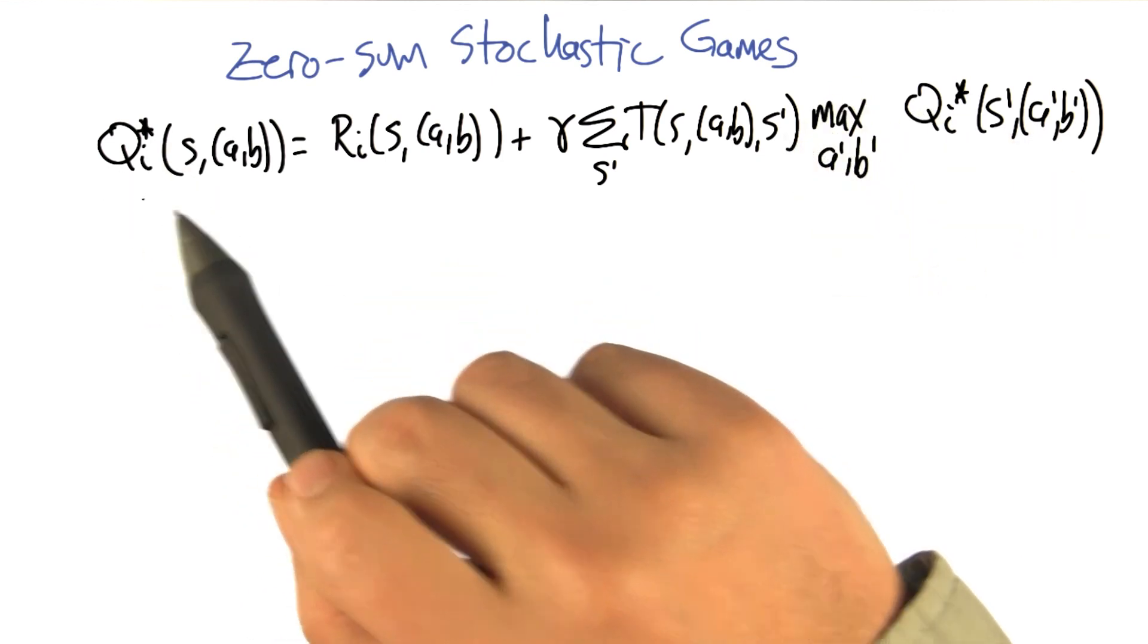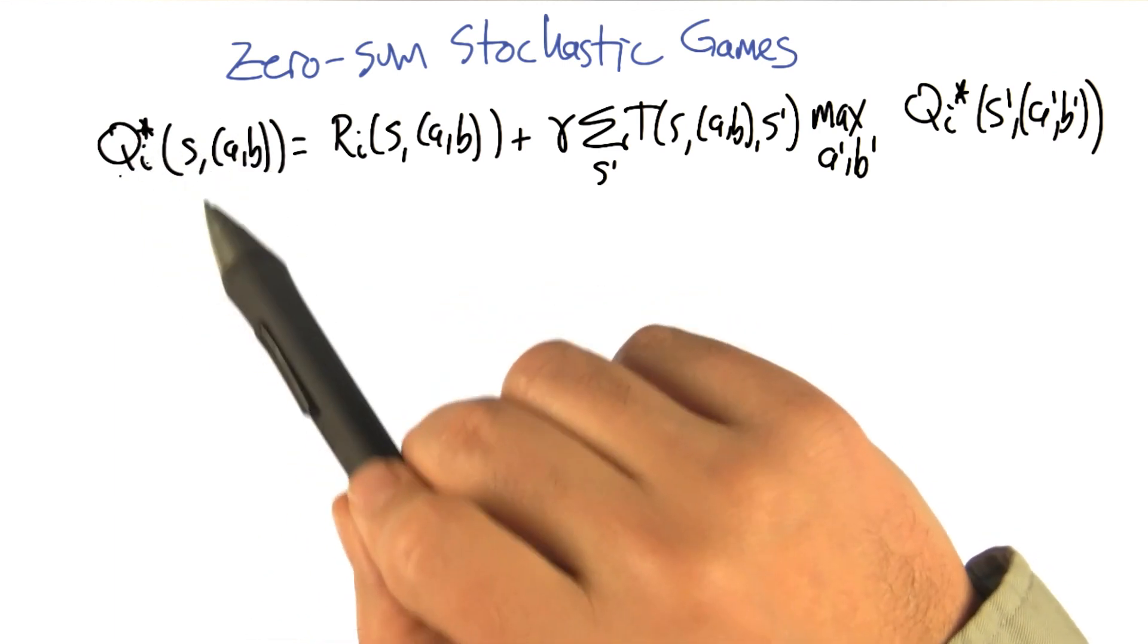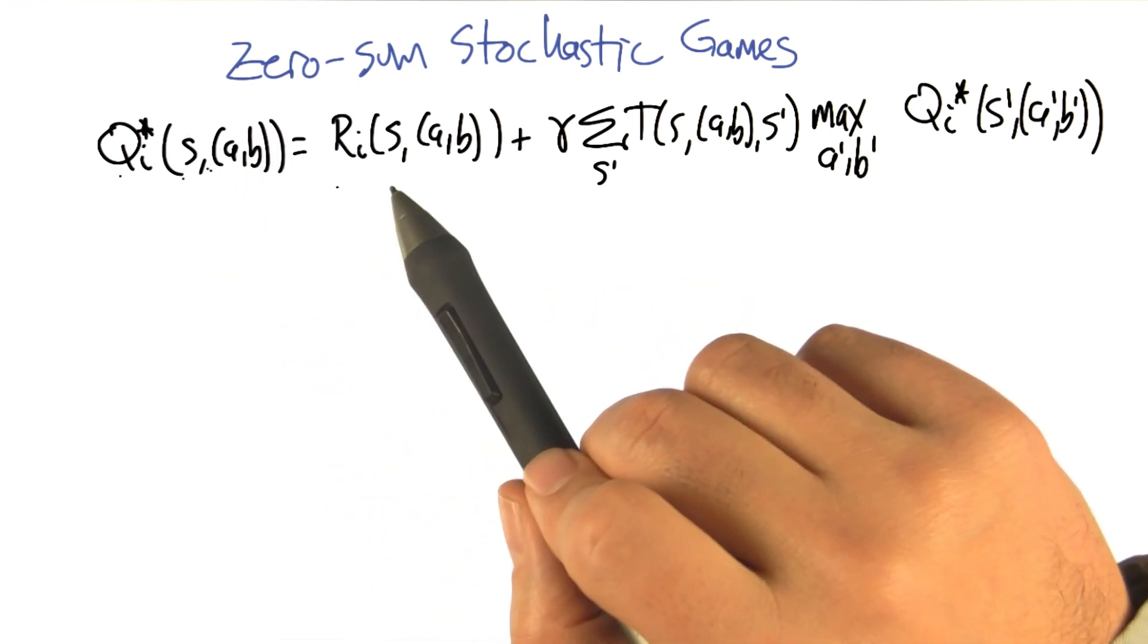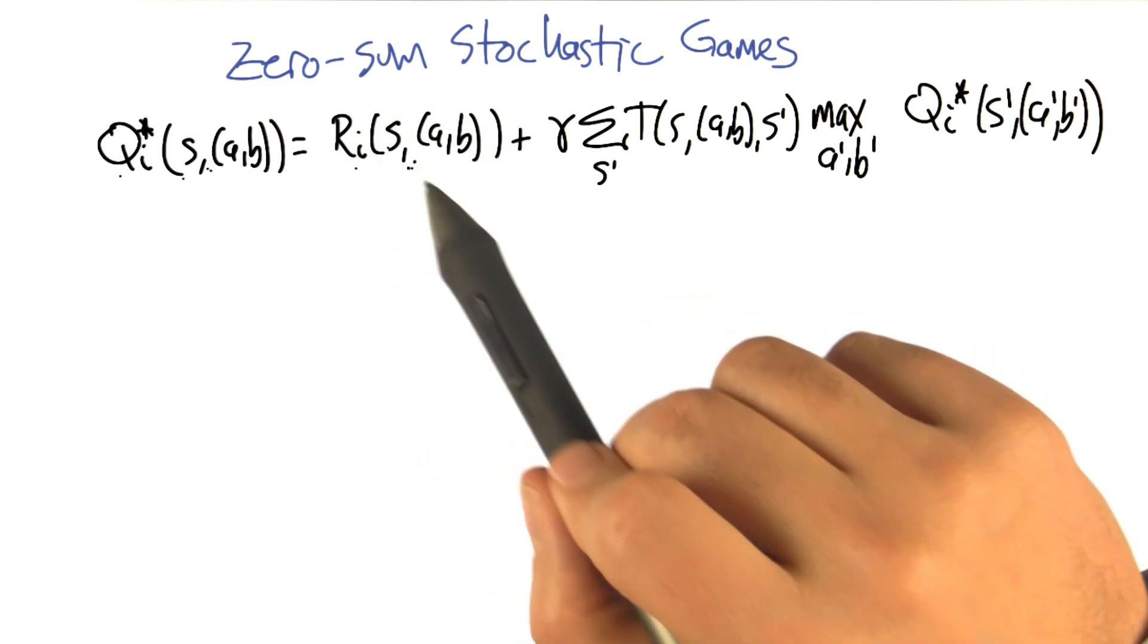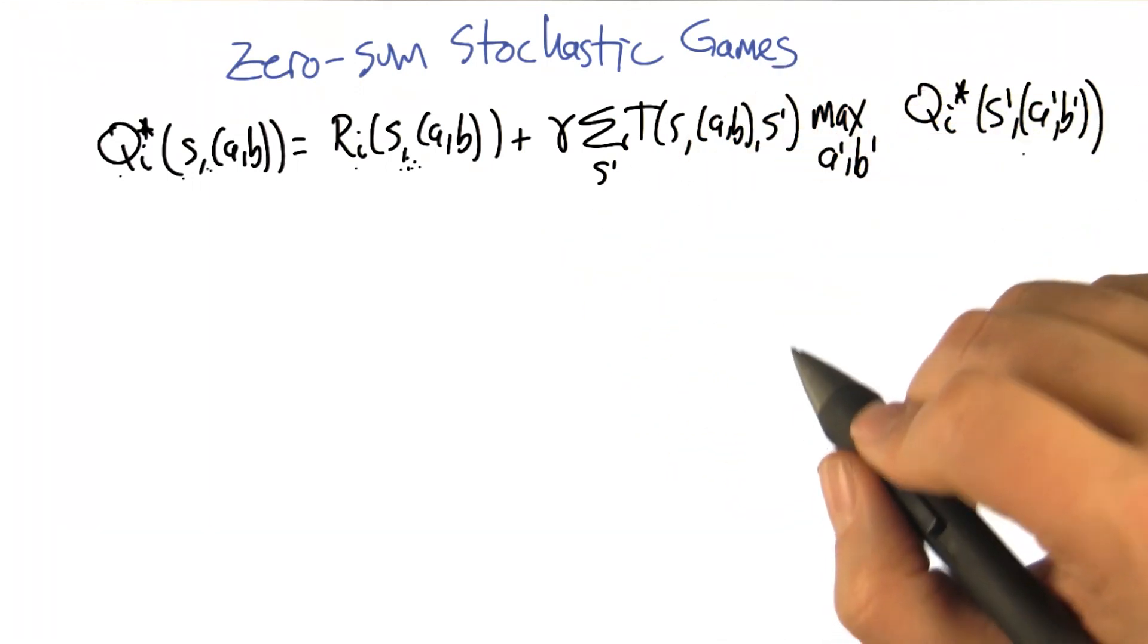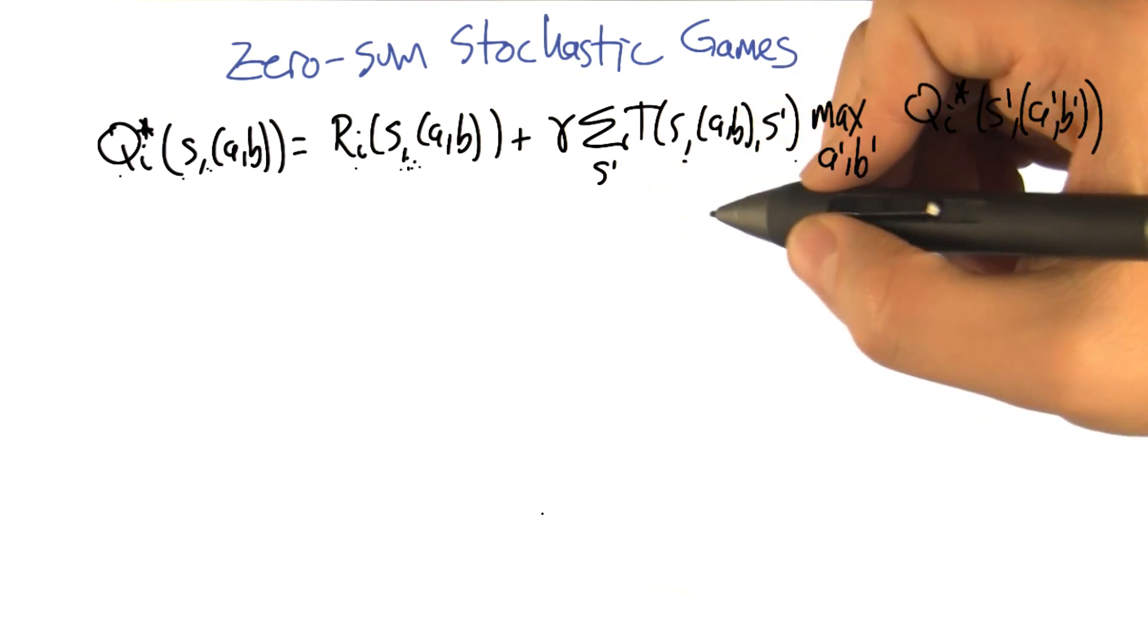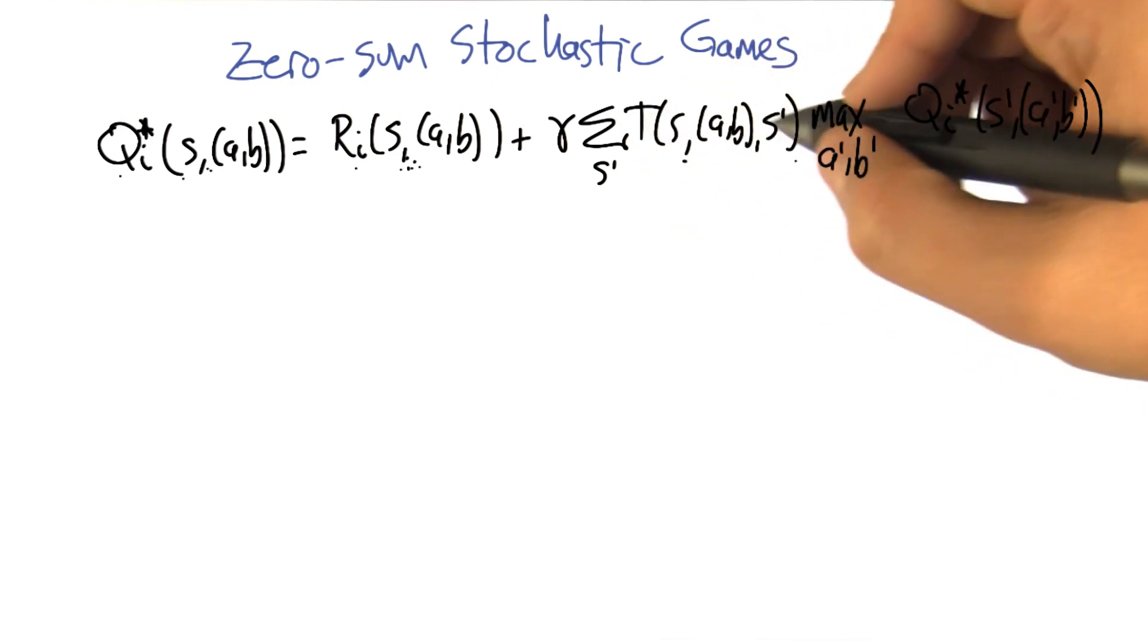We've got qi star—there was no i before, but q star is defined over state actions. So here we're going to define it over joint actions for the two players, action pairs. The immediate reward to player i for that joint action in that state, plus the discounted expected value of the next state. So we need to factor in the transition probabilities. The transition of actually going to some next state S prime is T of S, A, B, S prime.